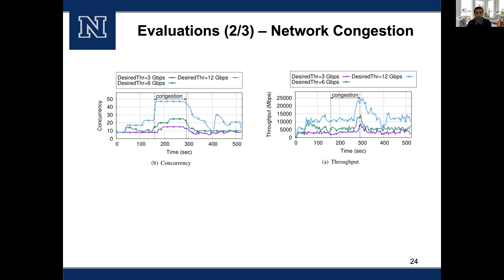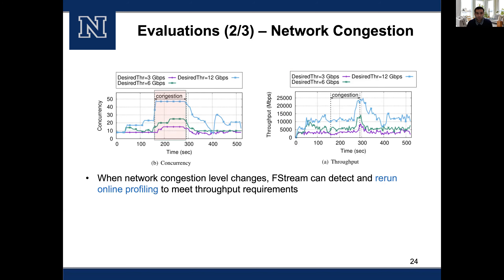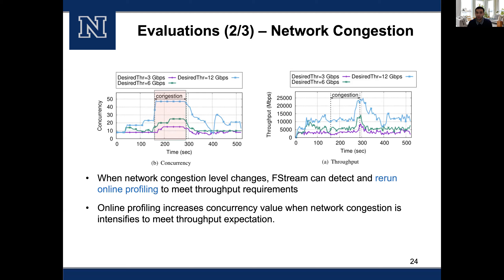We also evaluated FC Stream performance when network congestion changes over time. In this case, network congestion is introduced at around 160 seconds until around 309 seconds. As seen in the figure, FC Stream increases the concurrency level when congestion is introduced in order to maintain transfer throughput at the desired level. When the congestion is over and background traffic returns to normal, it reduces concurrency back to where it was before the congestion, ensuring that overhead on the network and the system is kept at a minimal level.